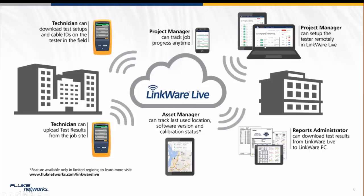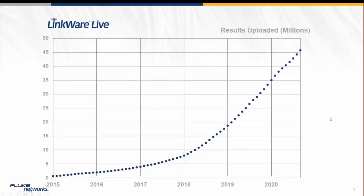What's new — and Jason will demonstrate — is that if you build your cabling plant in the Planet software, you can upload that directly to LinkWare Live, push it to the testers, and have results flow right back to Planet, eliminating the manual setup step. LinkWare Live has been a big success: we're approaching 50 million test results uploaded since we launched in 2015, and you can see exponential growth — with a small dip where the pandemic hit, but picking back up.